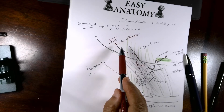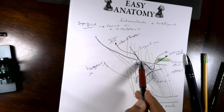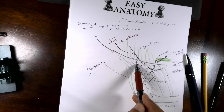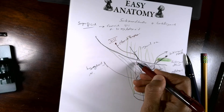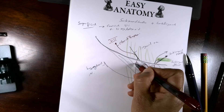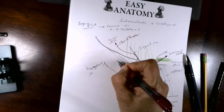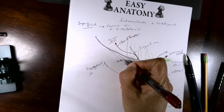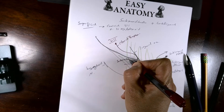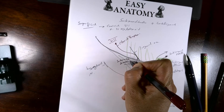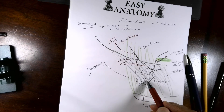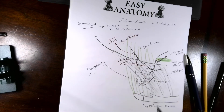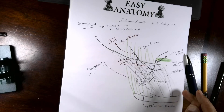So the chorda tympani supplies both the submandibular and sublingual glands. The facial nerve sends the chorda tympani, which joins the lingual nerve, then preganglionic fibers stop at the submandibular ganglion, and from there postganglionic fibers go to the submandibular gland and to the sublingual salivary gland.